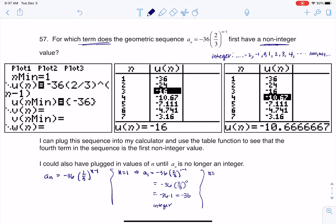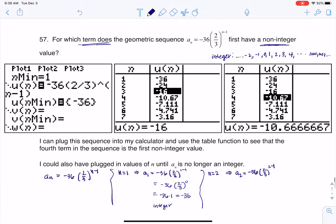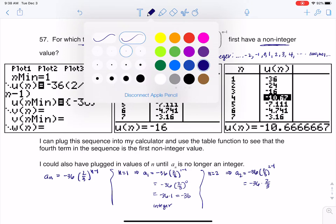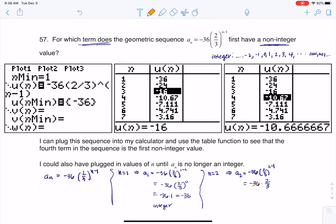All right, so then let's try n equaling 2. So if I try that, we would have a_2 would be equal to negative 36 times (2/3) to the 2 minus 1. That would be saying negative 36 times 2/3. And if we do a little cross canceling, or we do a little division, I should say, this would be a 12 here. So if I scooch back, this is going to be negative 24. Well, that is also an integer. So that's not my answer either.